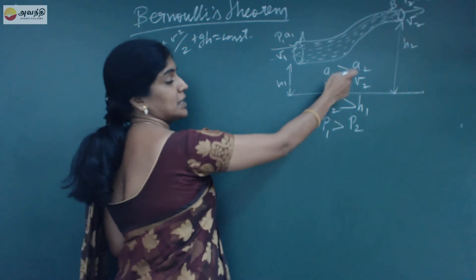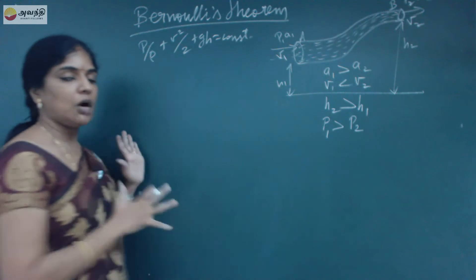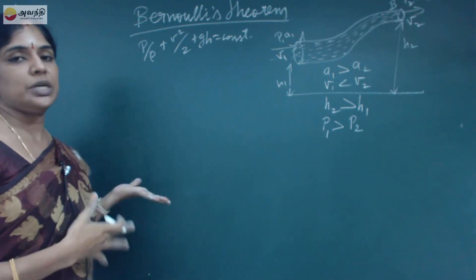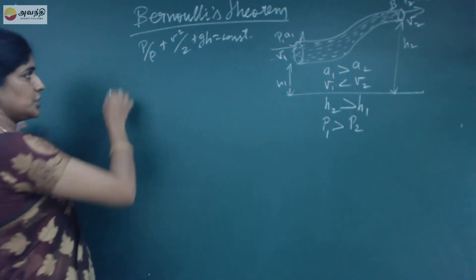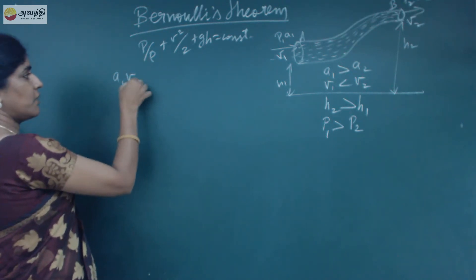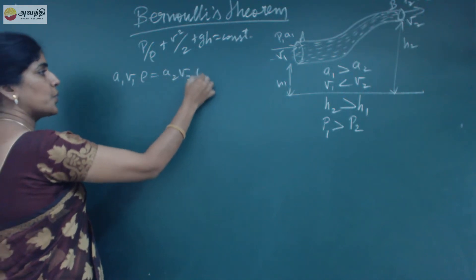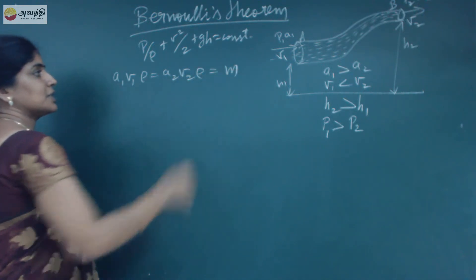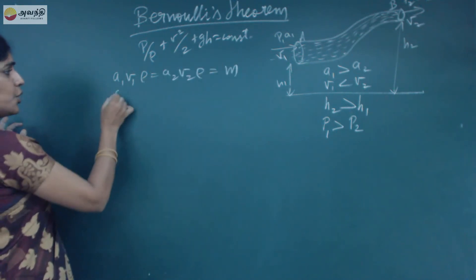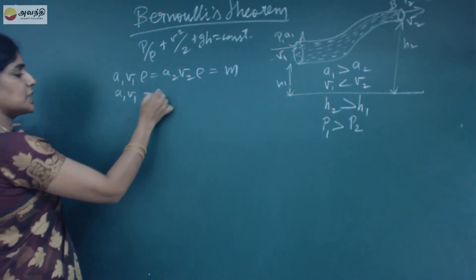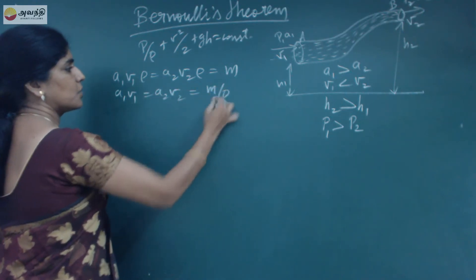Since A1 is greater than A2, V1 will be less than V2. By the equation of continuity, A1V1 rho is equal to A2V2 rho, equal to M — that is, the mass of the liquid. So A1V1 equals A2V2 equals M by rho.